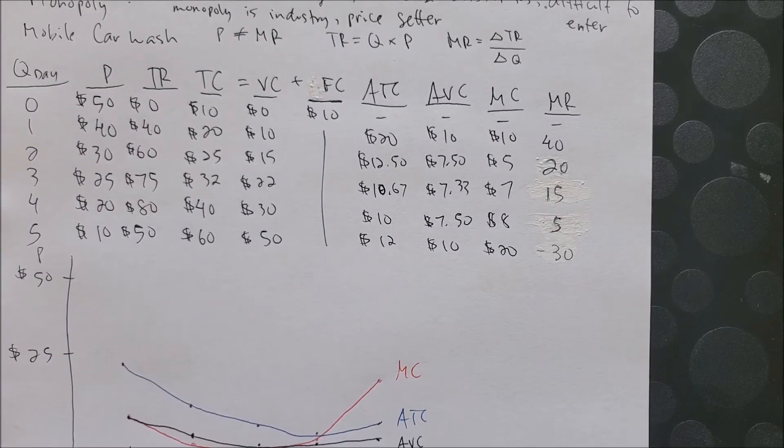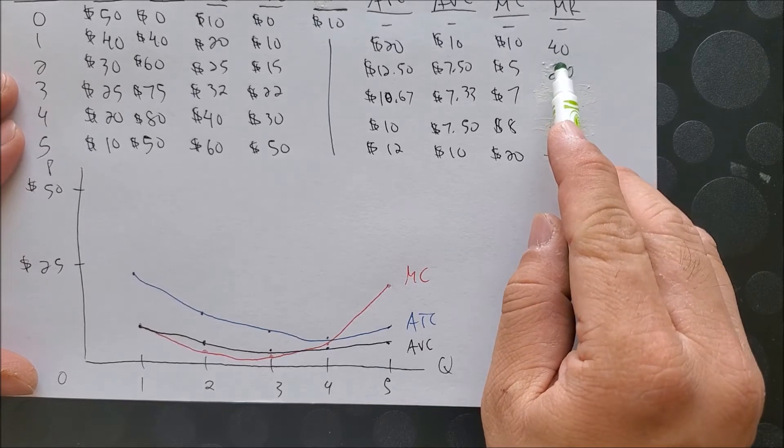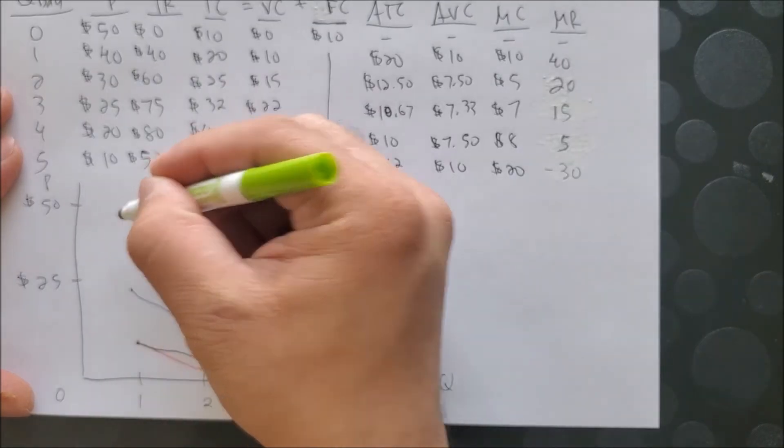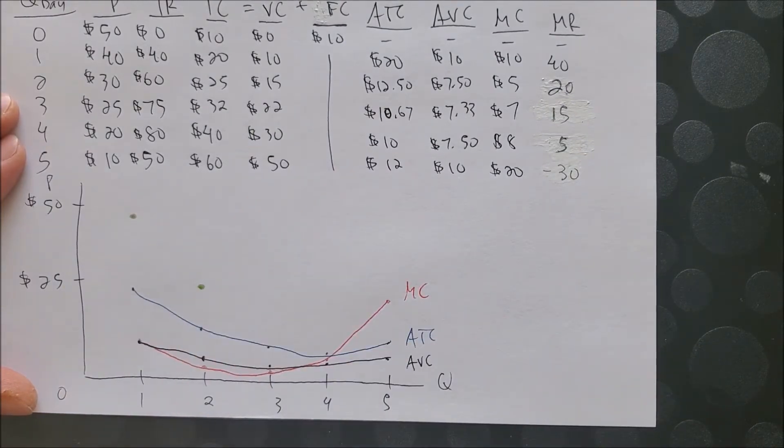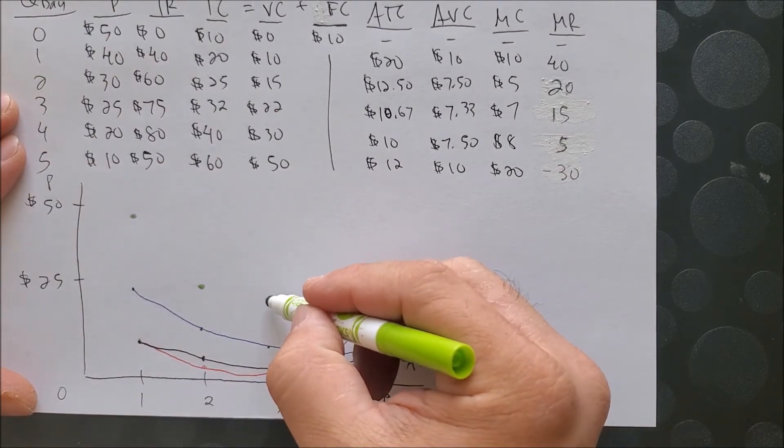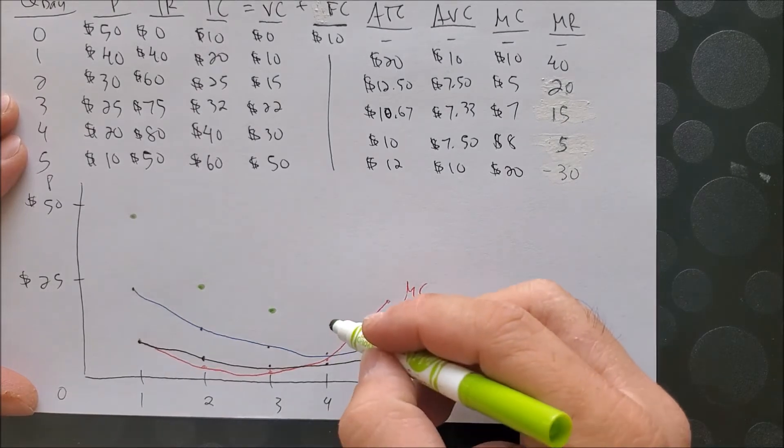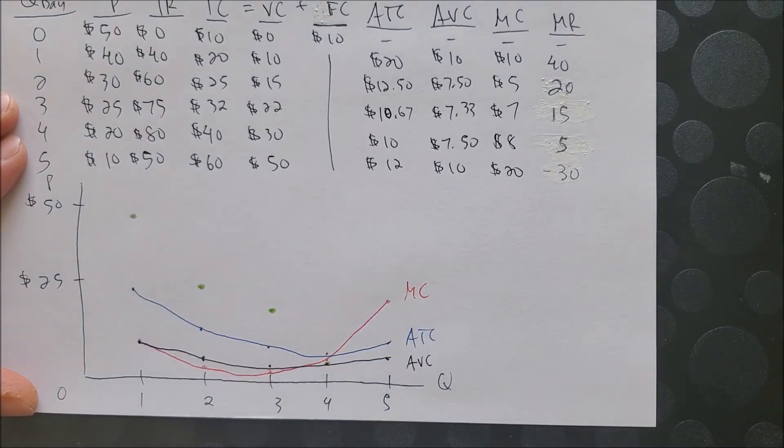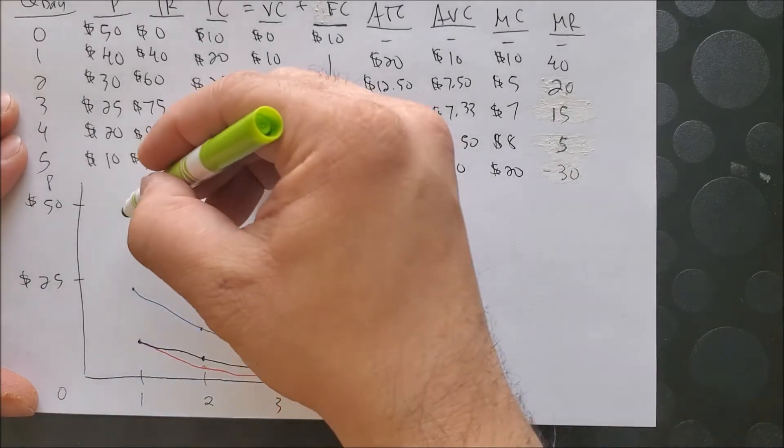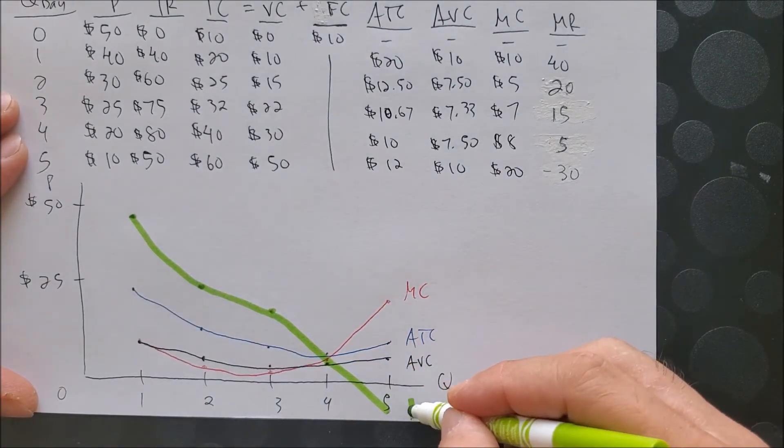And that's why we have to draw both the MR and price separately on our graph. So now we can go ahead and draw our MR. So here we have 1 and 40 somewhere there, 2 and 20, 3 and 15, 4 and 5 around here, and 5 and negative 30, which would be somewhere in quadrant 4. So I could draw the MR as such, like so, MR.